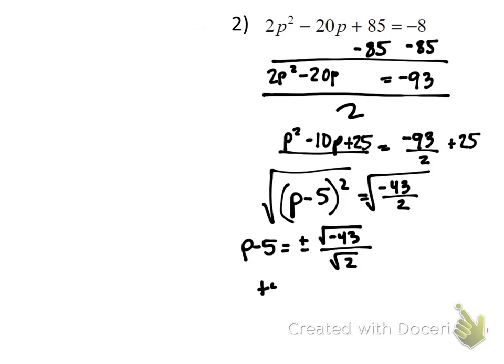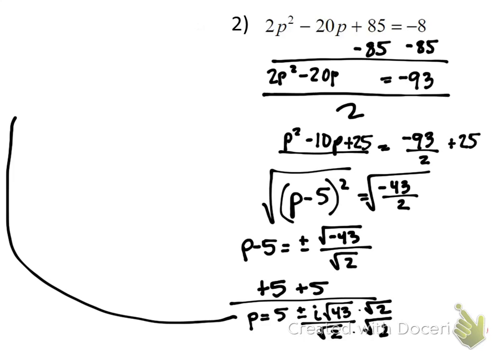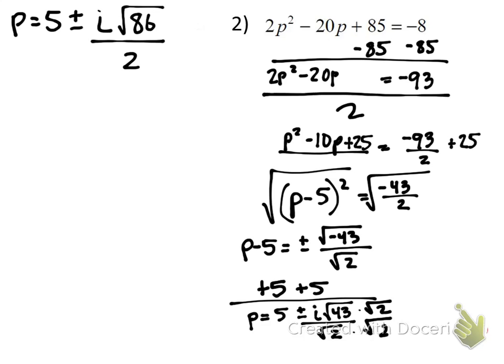I'm going to add 5 to both sides. When I do that, we get p is equal to 5 plus or minus, I'm going to simplify now. Negative 4, square root of negative 43 is going to be i rad 43 over rad 2. Rationalize the denominator, rad 2, we have to rationalize, we don't like that. So I'm going to move the answer, move it up here now. So p is equal to 5 plus or minus i, rad 43 times rad 2 is rad 86 over 2, right? Rad 2 times rad 2 is just 2.